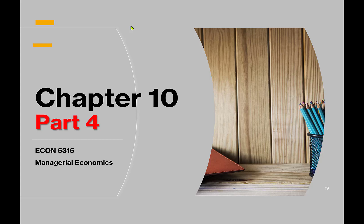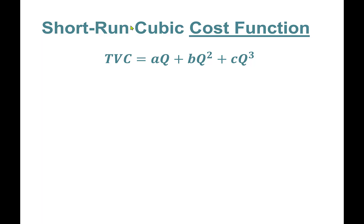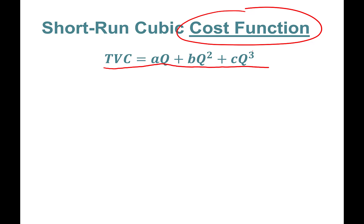Welcome back. This is Chapter 10, Part 4. In this part we'll learn about cost function estimation. We are going to focus on the short-run cubic cost function. Total variable cost has the functional form: TVC equals a times quantity, plus b times q squared, plus c times q cubed. The cubic name comes from that third power.